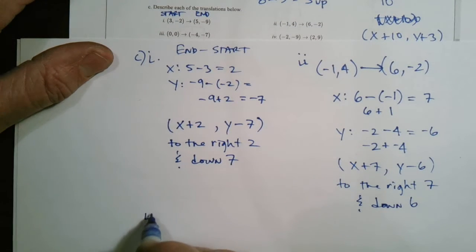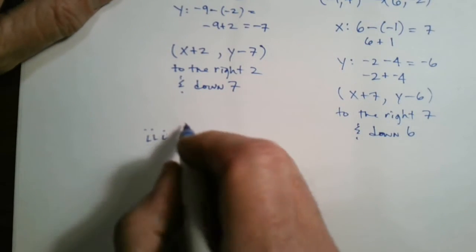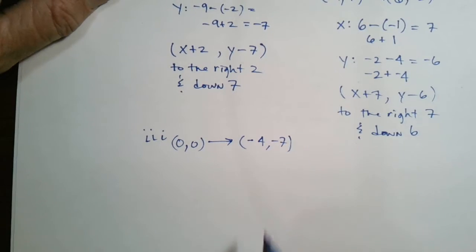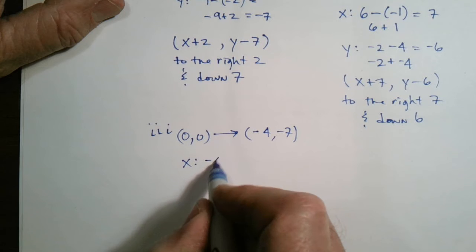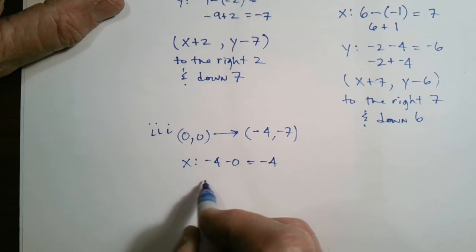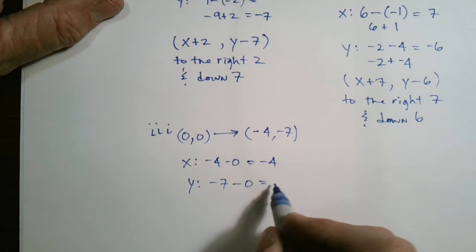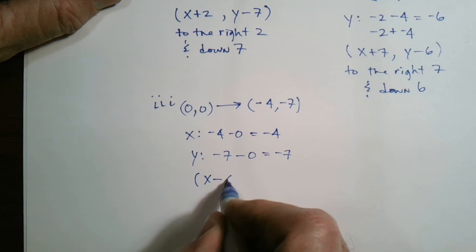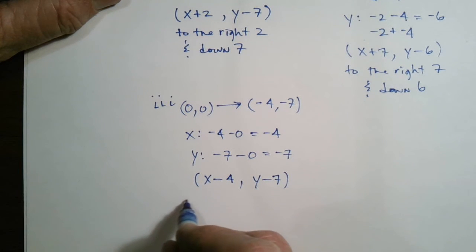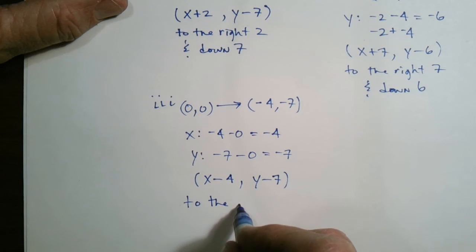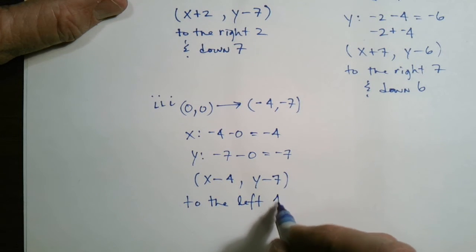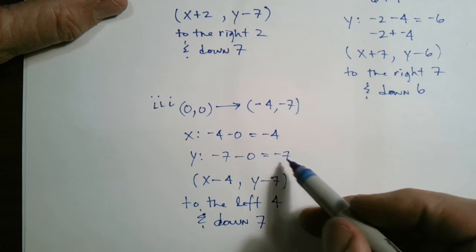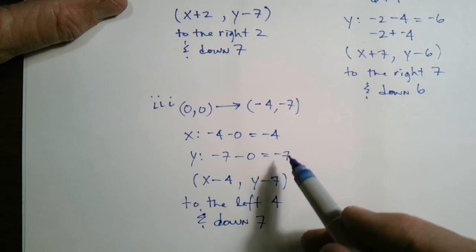For sub-problem iii, the starting point is zero, zero and I'm ending at negative four, negative seven. The X would be negative four minus zero, which equals negative four. The Y would be negative seven minus zero, which is negative seven — end minus start. So we can say this is X minus four, comma Y minus seven. In words, negative four means to the left, so left four; and negative seven means down seven.